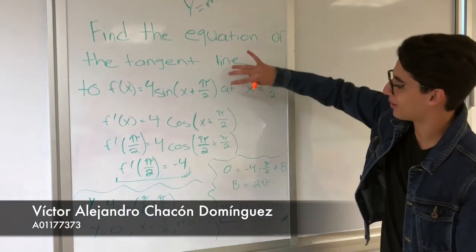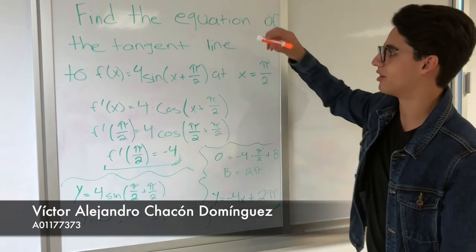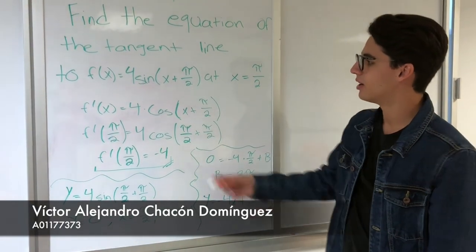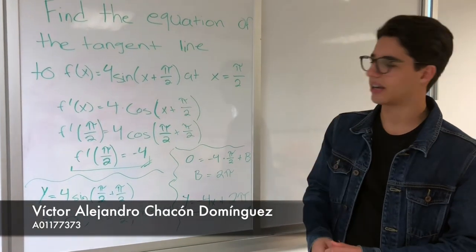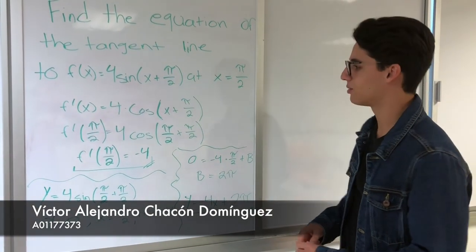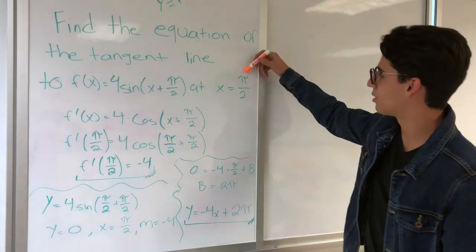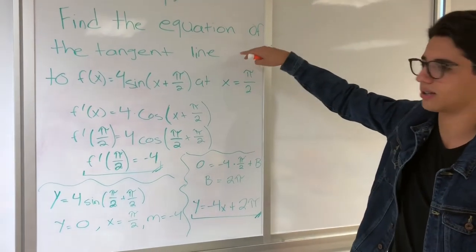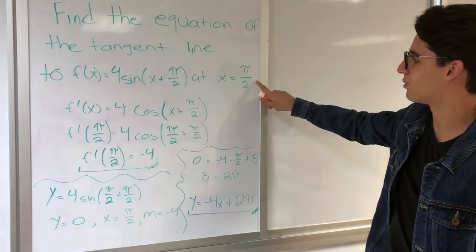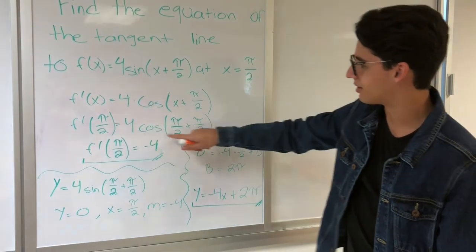This is problem six. The first step: I find the derivative of 4 sin(x + π/2), which gives me 4 cos(x + π/2). This will be the final derivative. Once we have this, we substitute, since we were told to find the equation of the tangent line.